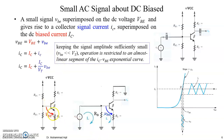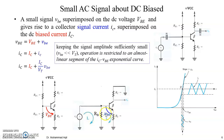So now you have found the DC parameters, you are able to draw the AC equivalent circuit, and you are now at the stage of finding the AC VBE. We have not found it yet, but we can find VBE by using Kirchhoff's voltage law, and once it is found we can find the collector current.